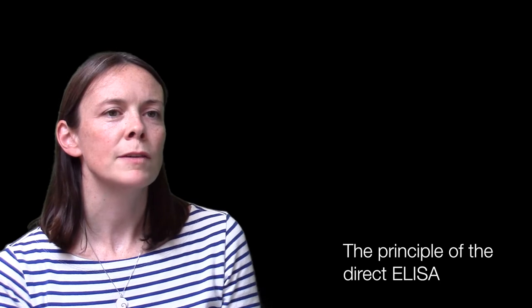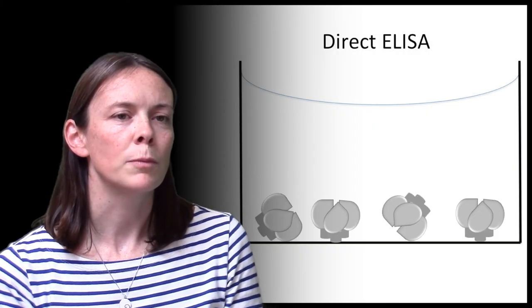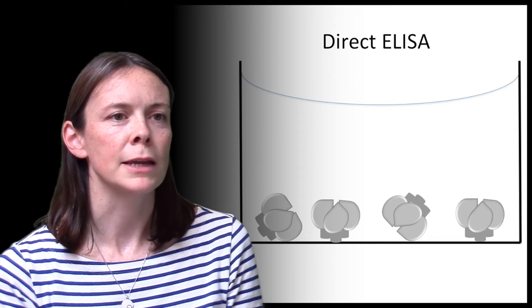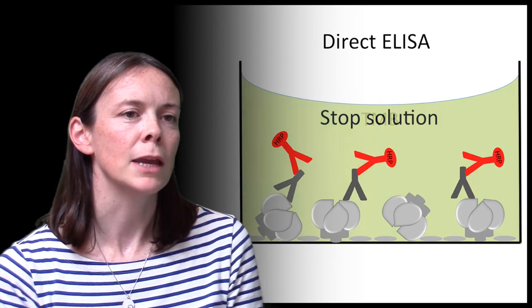A direct ELISA follows a very similar procedure to a capture ELISA except that in the first instance, the protein of interest is bound directly to the plate after which the processes are the same as for the capture ELISA as shown here.